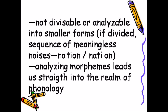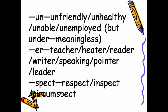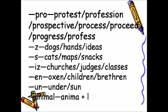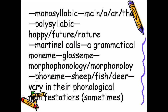Analyzing morphemes leads us into the realm of phonology. Examples: 'un-' as in unfriendly, unhealthy, unable, unemployed; 'er' as in teacher, heater, reader, writer; 'spect' as in respect, inspect, circumspect; 'pro-' as in protest, profession, proceed, progress; plural morphemes: '-z' as in dogs/hands/ideas; '-s' as in cats/maps/snacks; '-iz' as in churches/judges/classes; '-n' as in oxen/children/brethren.